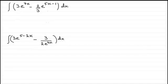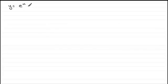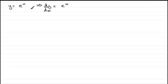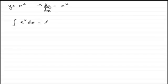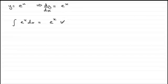Let's start with y equals e to the power x. We should already know that if we differentiate this with respect to x — in other words find dy/dx — it turns out to be e to the power x. Integration being the inverse of differentiation means that if we integrate e to the power x with respect to x, the answer is e to the power x. We must remember to add the constant of integration, plus c.